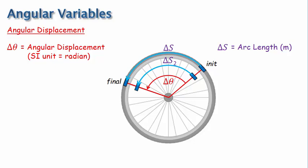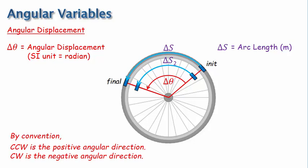Something else to note here is that, by convention, counterclockwise is the positive angular direction. So any angular variable that points in the counterclockwise direction is positive, and any angular variable that points in the clockwise direction is negative. Before we discuss the other angular variables in detail, let's first talk about radians.